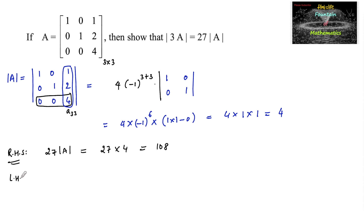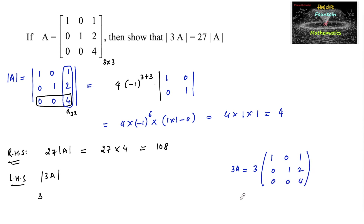Now let's find the LHS. We need det(3A), so first let's find 3A. Multiplying scalar 3 to each element of A: 3×[1 0 1; 0 1 2; 0 0 4] gives [3 0 3; 0 3 6; 0 0 12]. Now let's find the determinant of this matrix.